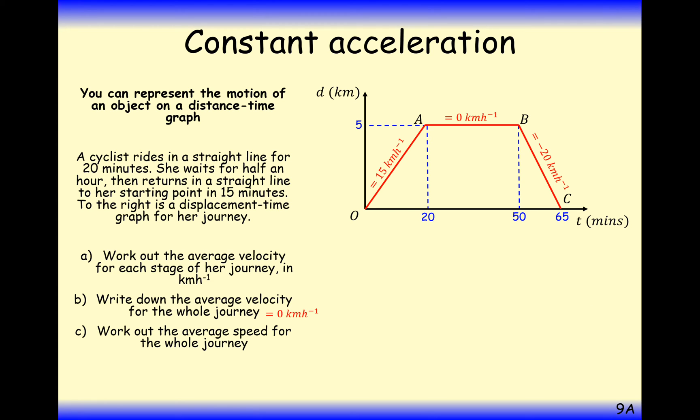Work out the average speed for the whole journey. Now you're talking about a different kettle of fish. In total, the distance that was traveled is 10 kilometers. Five going there, five coming back. And the total time taken was 65 minutes, so 1 and 5 60ths. You could divide by 65 and then times by 60. In this case we're going to get 9.23 kilometers per hour. So notice the difference in terminology. Average speed just takes positive values. Average velocity works with displacement, which is the difference between where you started and where you finished. And if that hasn't moved, then your displacement is zero.